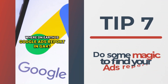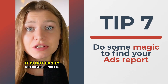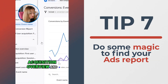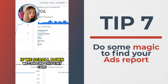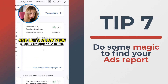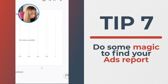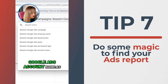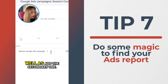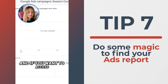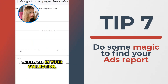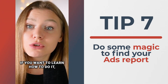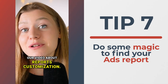Where on earth is the Google Ads report in GA4? It's not easily noticeable. Go to Reports, then Acquisition, then Acquisition Overview. Scroll down to find the tiny card and click View Google Ads Campaigns. You can also change the primary dimension — for example, to Google Ads account name — and add a secondary dimension. If you want to access this report in your collection, save it using the Customize Report feature. Check our video about Reports Customization to learn how.